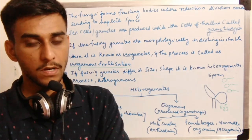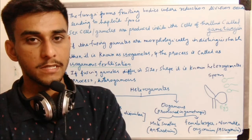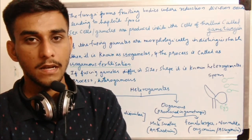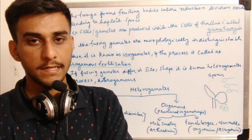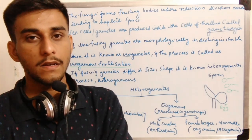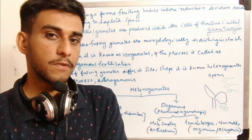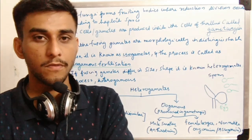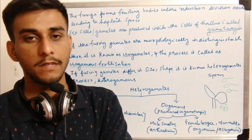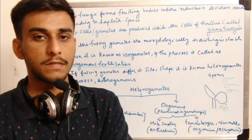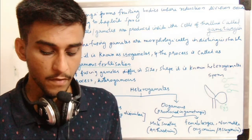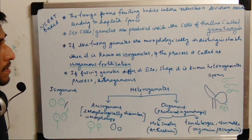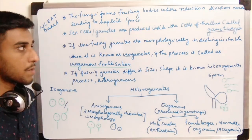A diploid zygote is formed and later gametes are formed for the next generation. The gametes will be sex cells — either spores or formed by the fusion of the thallus somatic cells or hyphae. The fungi form a fruiting body where the reduction division occurs, leading to haploid spores.